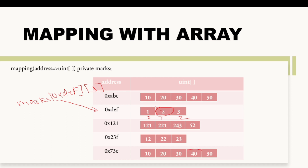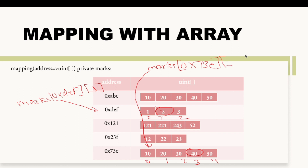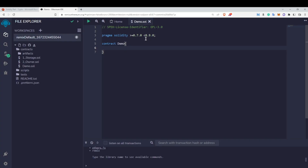Let me give another example. To access a particular data point, first write the variable name marks, then inside brackets the address — say '0x73e'. This points towards that address's array. If the array has elements at indices 0, 1, 2, 3, 4 and I want index 3, I write another square bracket with 3. This way I can point towards that specific data.